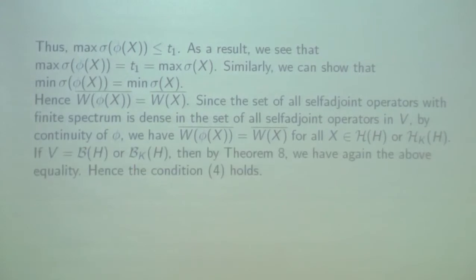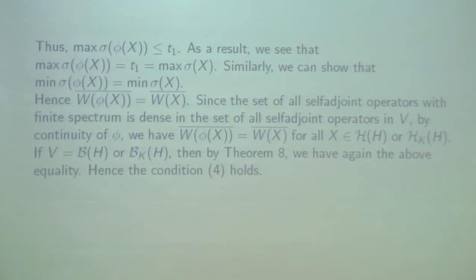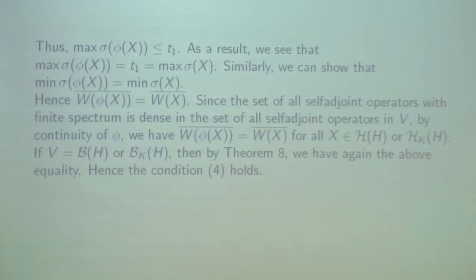For self-adjoint operators with finite spectra we get the following equality. If we continue with phi as assumed, we get the following equality for all self-adjoint operators with the additional condition. If phi is one of the following spaces of all bounded operators, we get the equality once again using theorem number 8, and then condition number 4 holds.